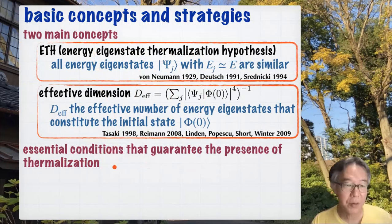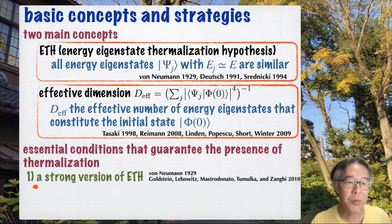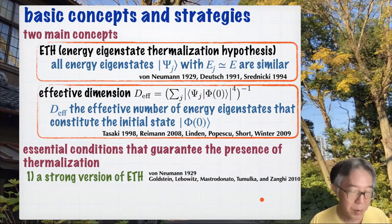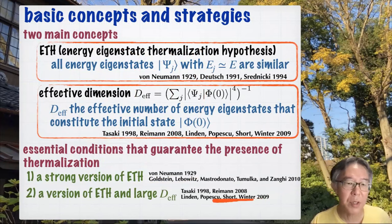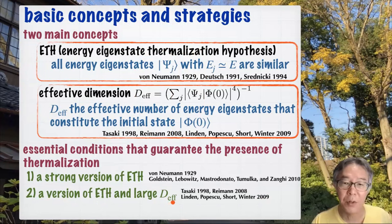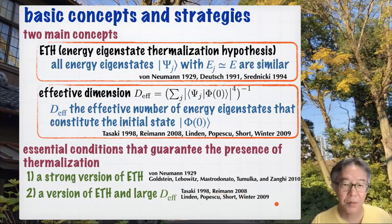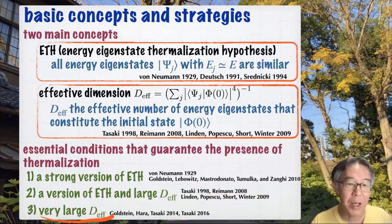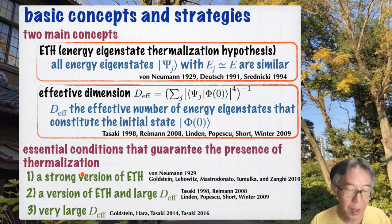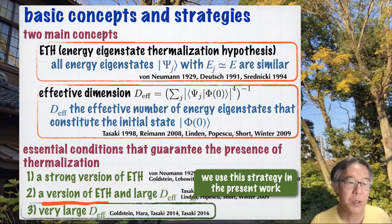I can roughly classify the strategies for proving thermalization into three. The first strategy is to assume a strong version of ETH — it goes back to von Neumann and was reformulated in modern language in a later paper. The second strategy, which is most common, is to assume a version of ETH — not a very strong one — and also assume a moderately large effective dimension. This kind of strategy was first discussed by myself, with later more refined works. The third strategy assumes only that the effective dimension is very, very large. In this paper, we use this third strategy to establish the presence of thermalization.